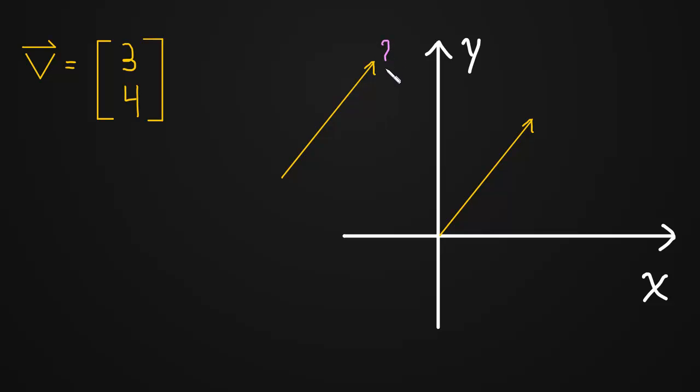Now what is this new vector? It's an interesting question because clearly it still moves over 3 and up 4. It's an exact copy, so it must. It must move over 3 and up 4, which means that it's pointing in the same direction as our original vector v, this question mark vector.